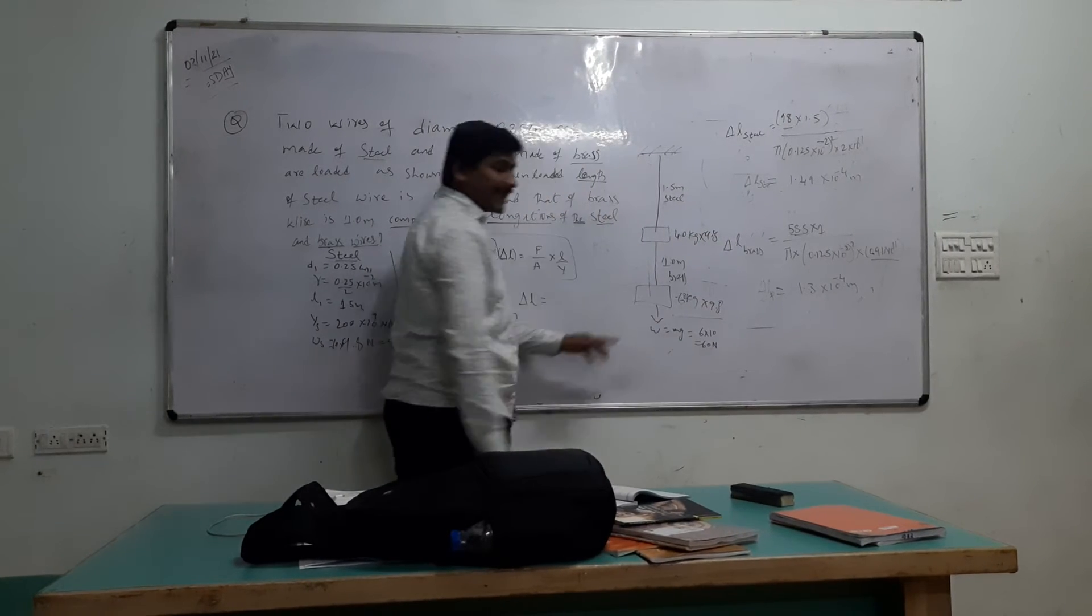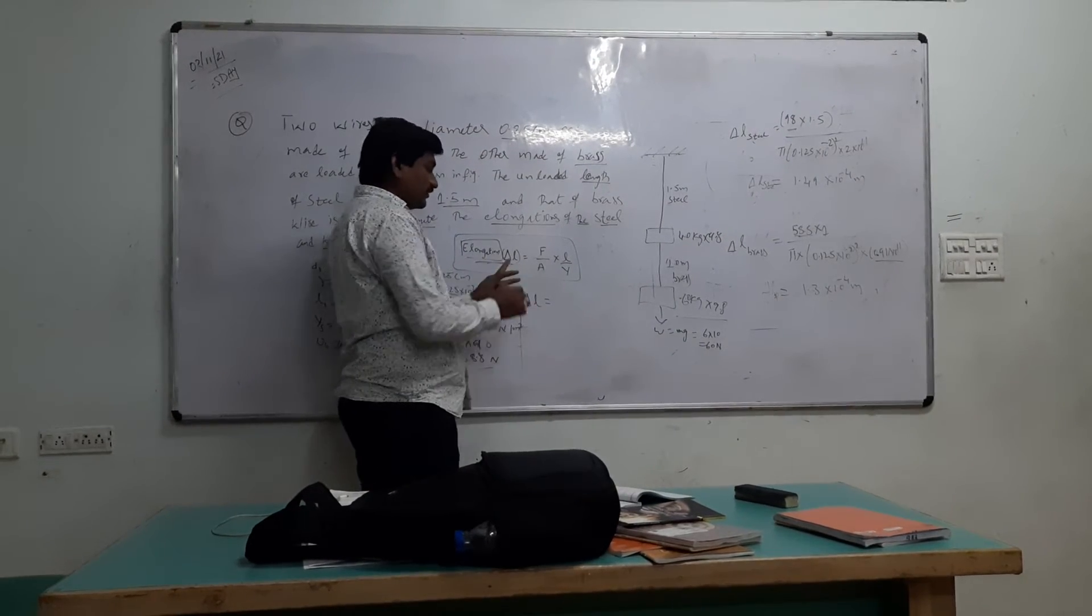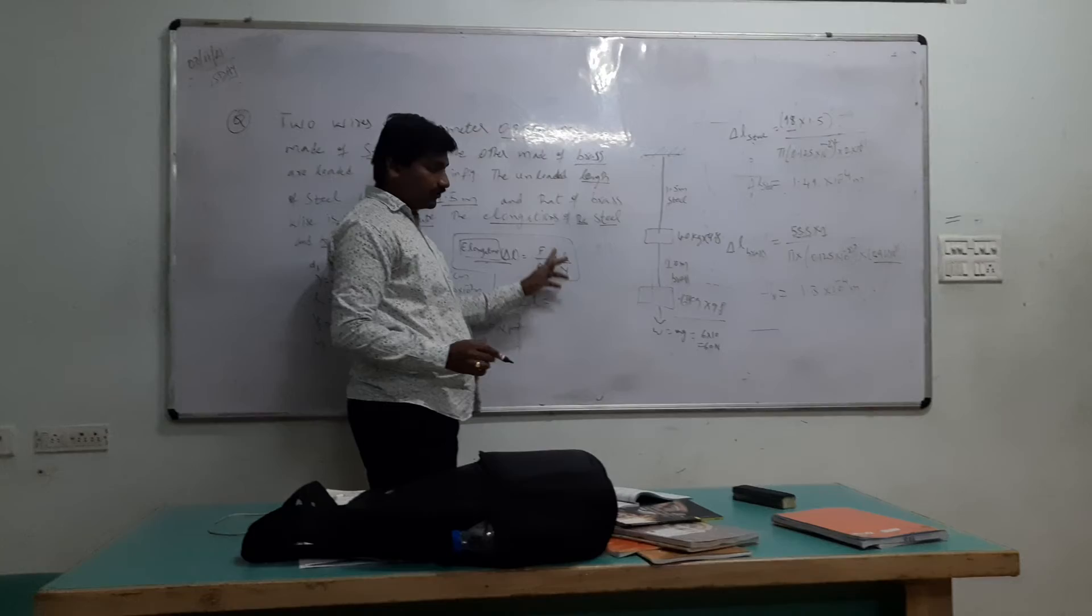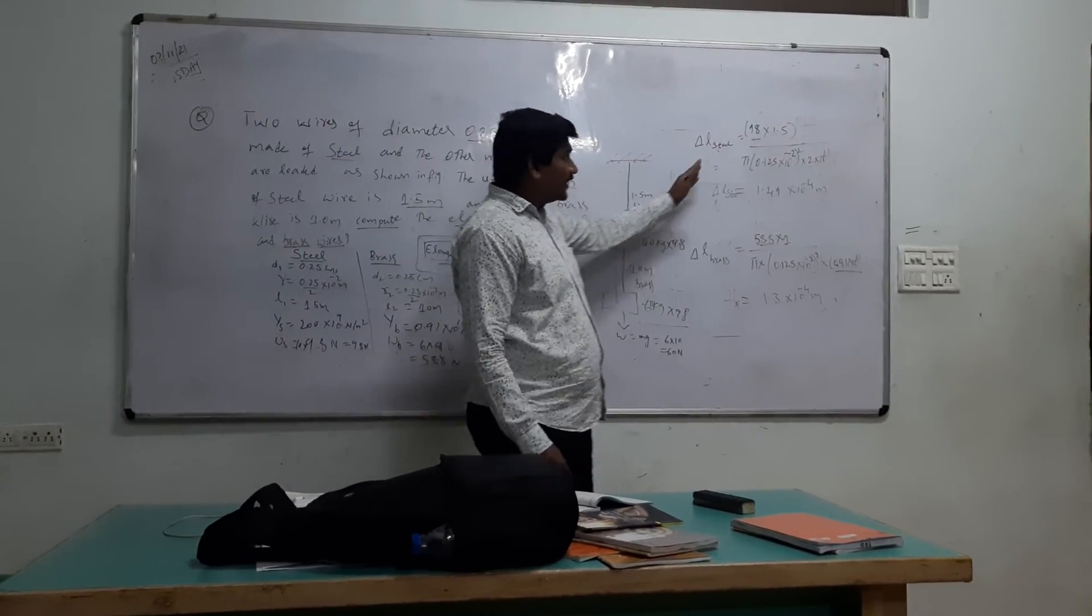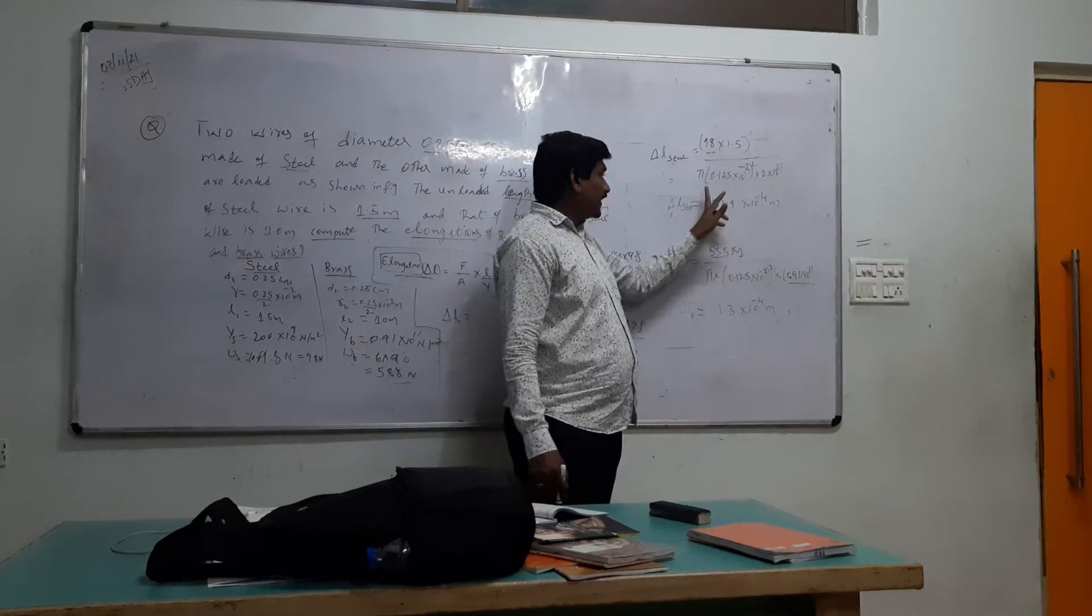So that is acting as a load. Therefore from Young's modulus, elongation delta L equals F by A into L by Y. If you substitute the given values and simplify, then we have